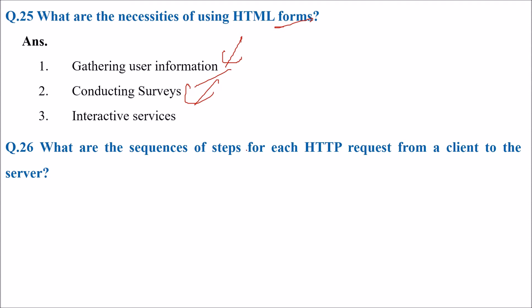What are the sequence of steps for each HTTP request from a client to the server? First make the connection, then make a request, then the response, followed by closing of the connection.